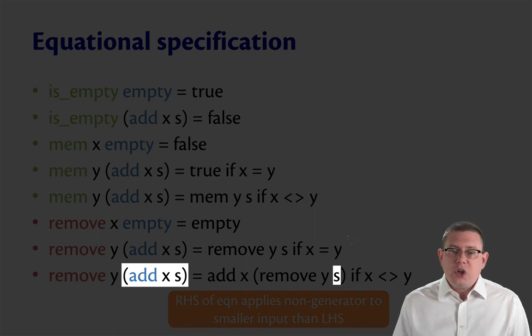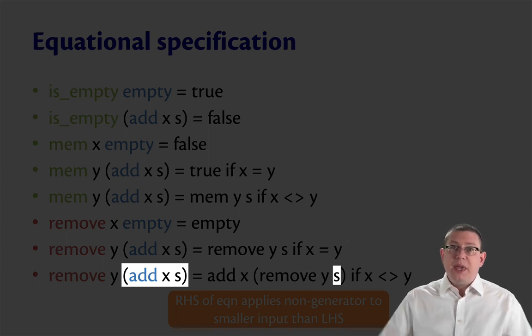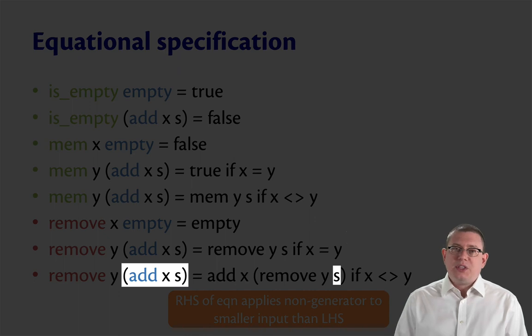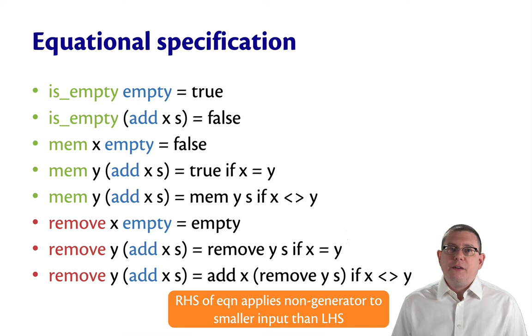Here's the sense in which I simplified it. I'm applying the non-generator, the manipulator here, to a smaller input on the right hand side than I did on the left hand side. So on the left hand side, I applied remove to something that was big and involved an add. On the right hand side, I'm applying remove to something smaller than that, just the s that was inside of the add. So that's the way I've simplified it. I've pushed that non-generator down inside, where hopefully if I keep doing this with bigger expressions, I'll be able to cancel it out eventually.